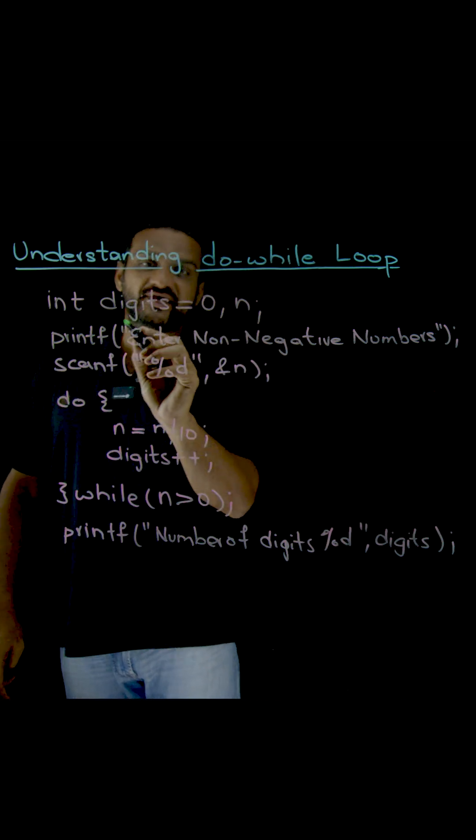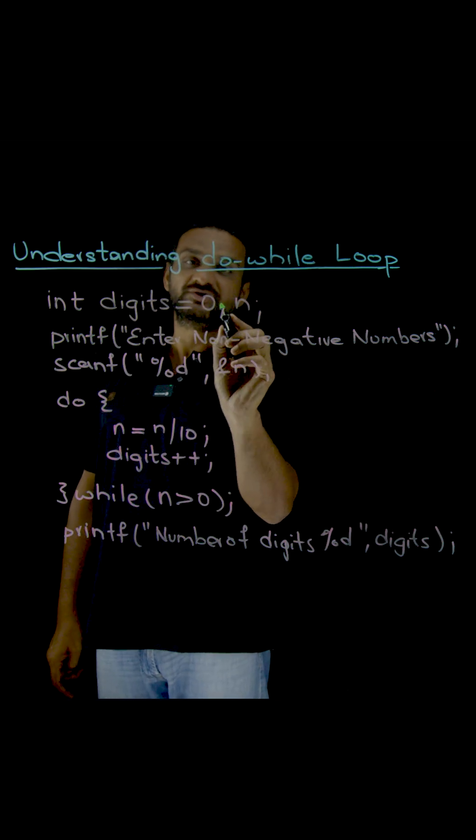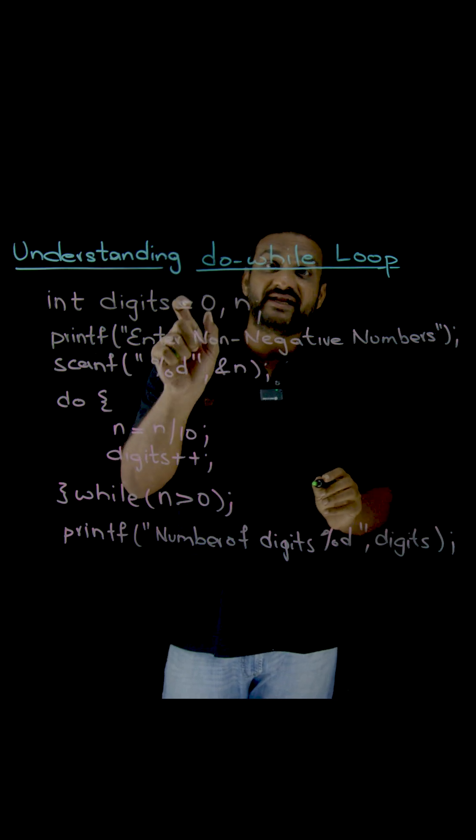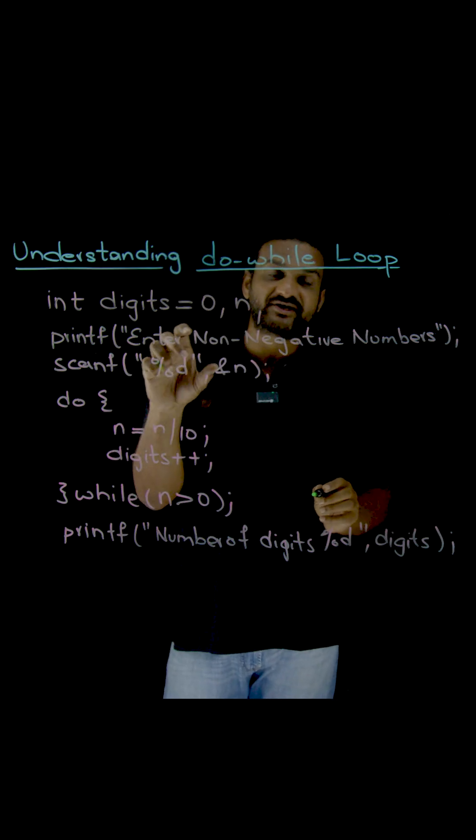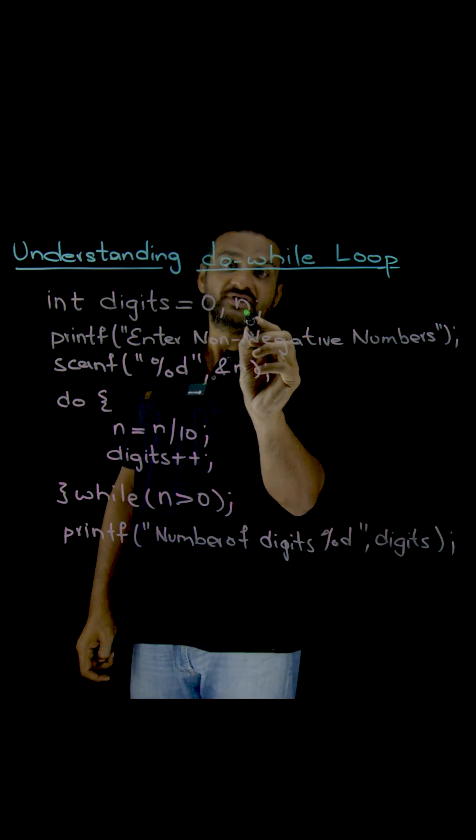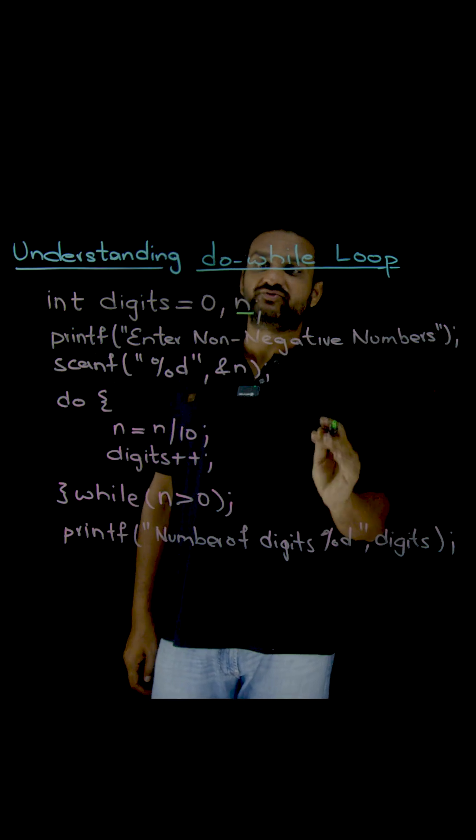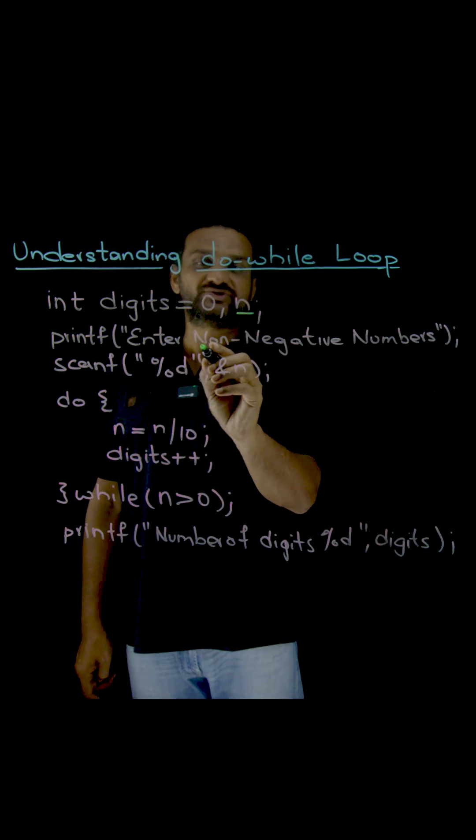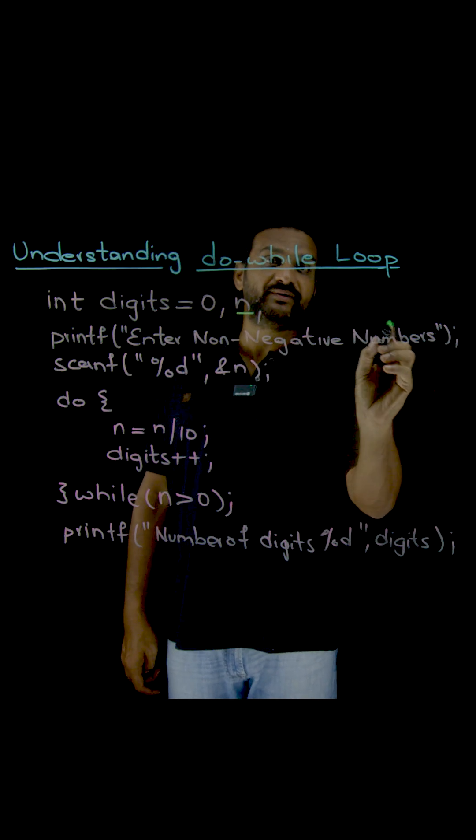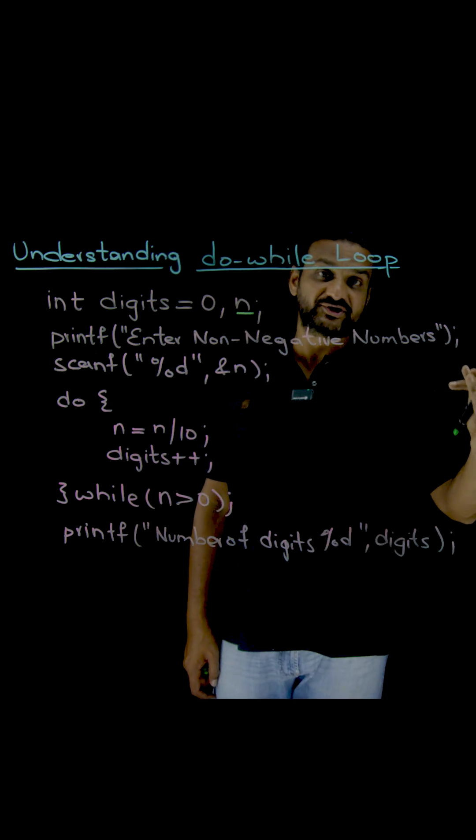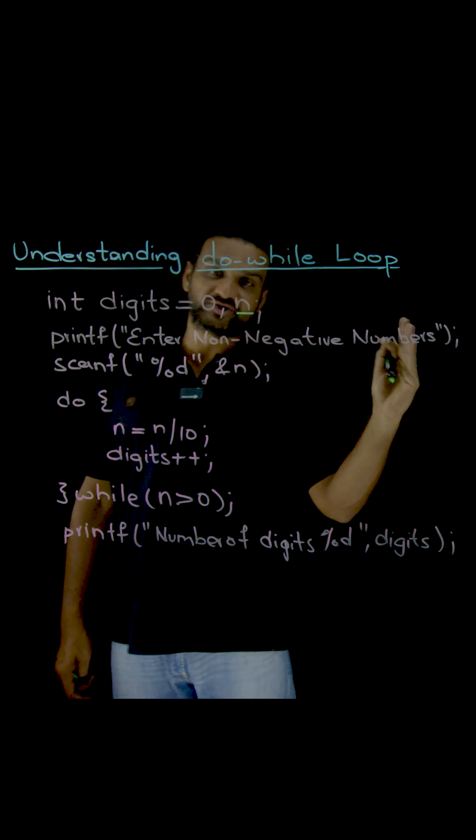Let's discuss. So here digits is equal to zero. Initially, I have taken a variable by name digits and the number of digits are zero because we haven't counted it till now. We have taken a variable to store the number that is given by the user. Here we are asking the user to enter non-negative numbers, so every time he has to give any number from zero to positive infinity.